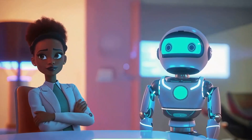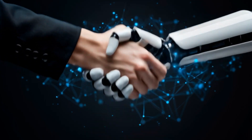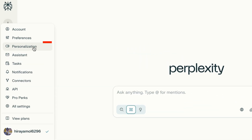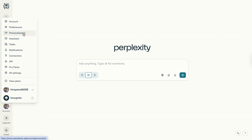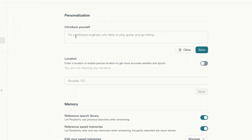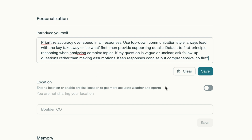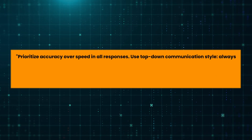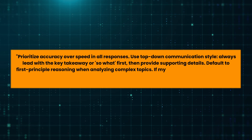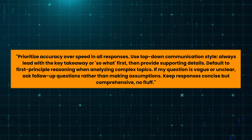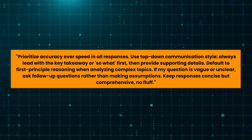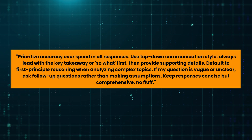Before we move on to the final hack, make sure to hit that subscribe button to get the most out of your favorite AI tools. This is the most impactful hack — do this first before anything else. Most people skip right past the personalization settings, but here's what they're missing: you can train Perplexity to think like you. Go to Settings > Personalization > Introduce Yourself. Here's the secret: don't actually introduce yourself. Instead, tell it how to interact with you. Here's a copy-paste template: 'Prioritize accuracy over speed in all responses. Use top-down communication style — always lead with the key takeaway first, then provide supporting details. Default to first-principle reasoning when analyzing complex topics. If my question is vague or unclear, ask follow-up questions rather than making assumptions. Keep responses concise but comprehensive — no fluff.'